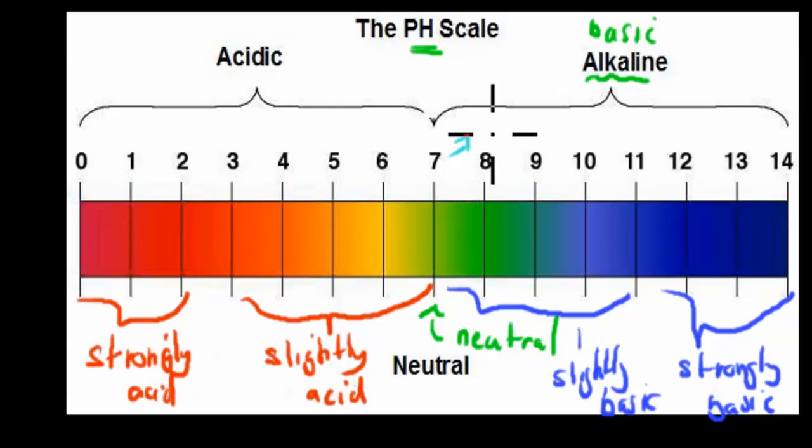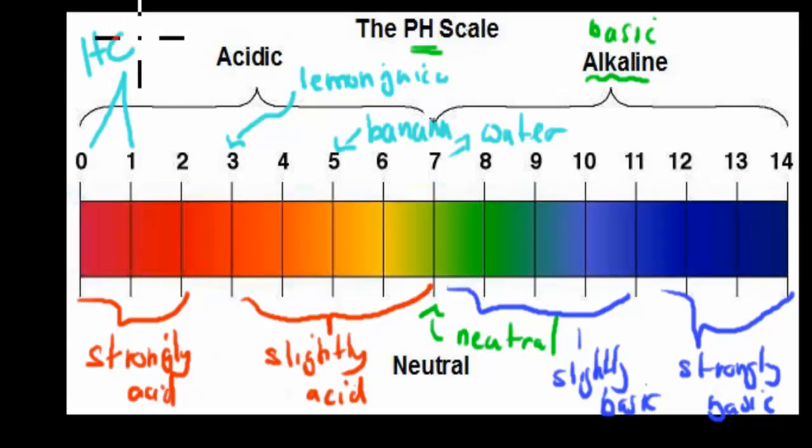A couple of things that you might know that fall in these areas. 7 is water, itself is neutral, pH of 7 usually. Things like a banana, for example, banana is acidic, which is quite surprising to some. We have lemon juice, which has a pH of around about 3. pH of 1 to 1, this is our hydrochloric acid. You might have dealt with that in year 9 and 10 for chemistry.